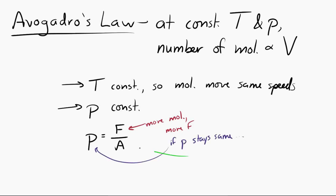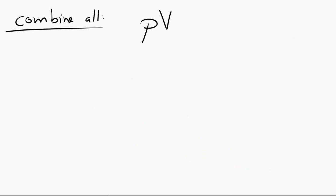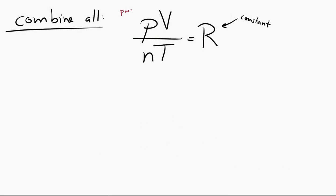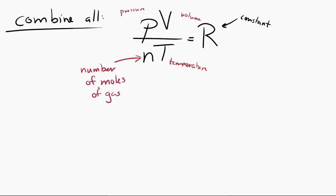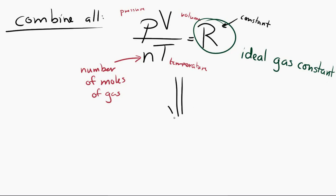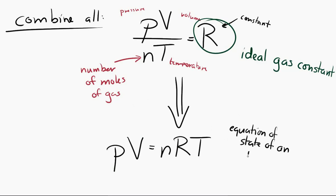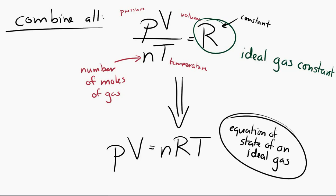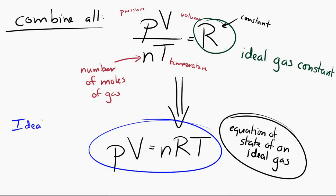Let's take all of these gas laws together and see if we can create one synthesized equation. PV over NT has to equal a constant — let's call it capital R. P is pressure, V is volume, T is temperature, and N represents the number of moles of gas. Rearranging, we get PV = nRT. That is called the equation of state of an ideal gas, and an ideal gas is defined as a gas which obeys this law.